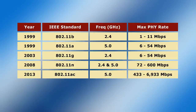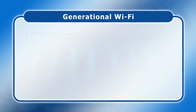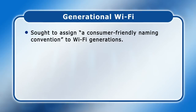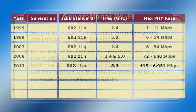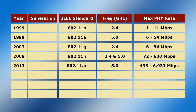In Wi-Fi's first 14 years, five standards were released, and things started to get a little complicated. In 2018, the Wi-Fi Alliance therefore introduced a new marketing program called Generational Wi-Fi. This sought to assign a consumer-friendly naming convention to Wi-Fi generations, providing manufacturers, operators, and end-users with an easy-to-understand description for both the Wi-Fi technology contained in a device and the connection that device makes with a Wi-Fi network. Generational Wi-Fi names do not replace previous Wi-Fi standards, although their use is strongly encouraged.